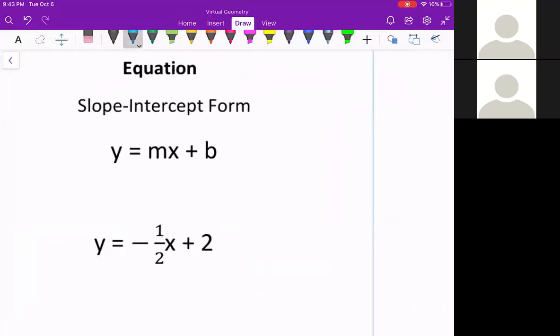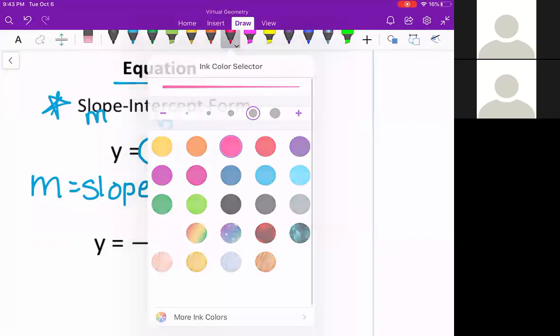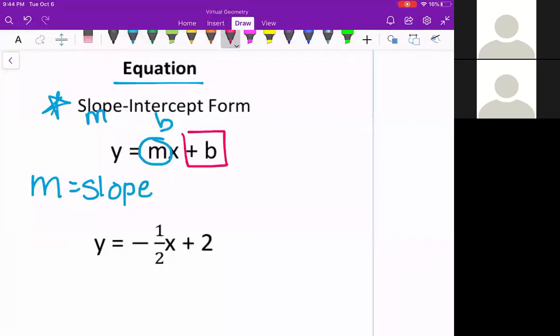So today we're looking at how to find the slope when you're given an equation. We have the slope intercept form here. Remember, slope is our m. The intercept stands for the y intercept or b. So when we have our equation, our m, whatever the coefficient of the x is, that's what we use for the slope.